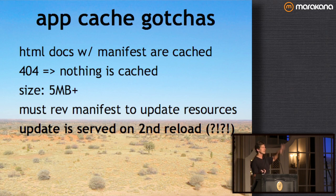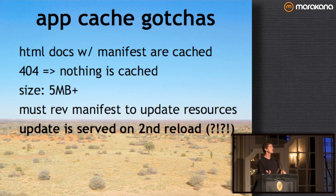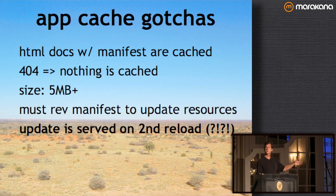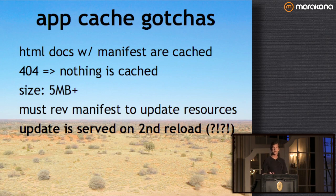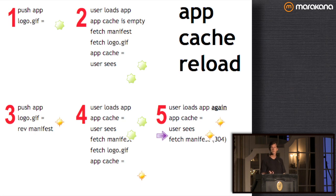Another gotcha: if anything in the cache 404s, nothing is cached. You have about 5 megabytes. The comment in the manifest file is important: if you update a resource like an image referenced in the manifest, App Cache will never update unless you modify the manifest file itself. The browser first checks whether the manifest file has changed — if it hasn't, it doesn't check any of the resources. So it takes two reloads for a user to see any updated resource.